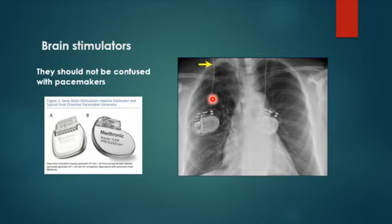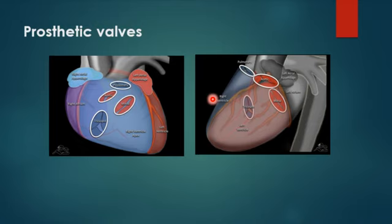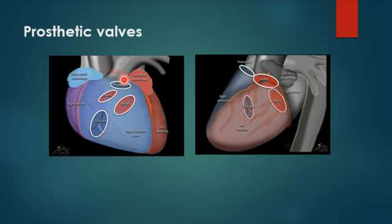Now we'll talk about prosthetic valves. The heart has four valves: the tricuspid on the right side between the right atrium and right ventricle, the mitral on the left side, the aortic, and the pulmonary at the beginning of the pulmonary trunk. On the lateral view, the aortic valve is most superior along the cardiac line, the tricuspid is the most inferior and anterior, and the pulmonary is the most superior and superficial.